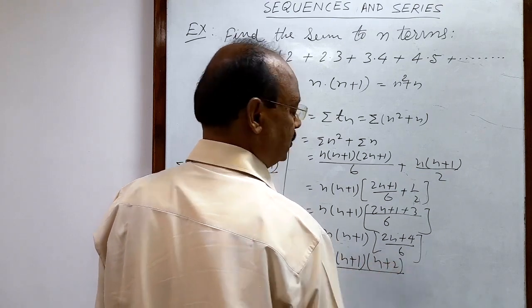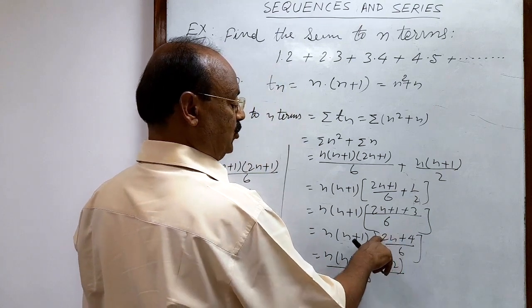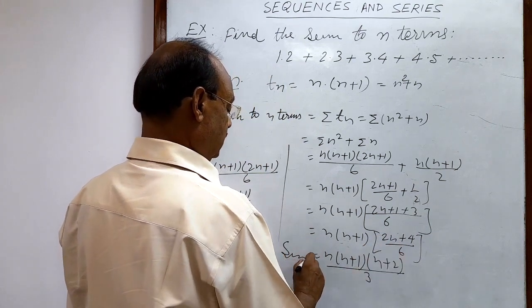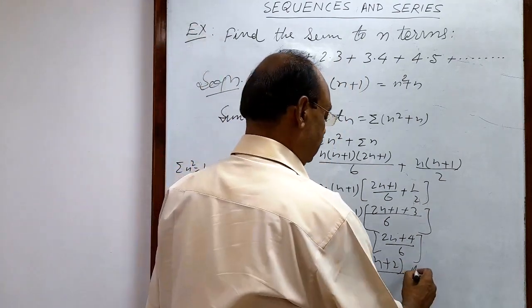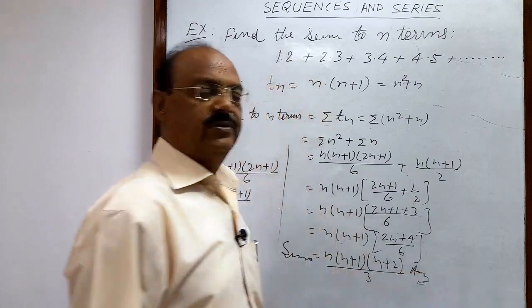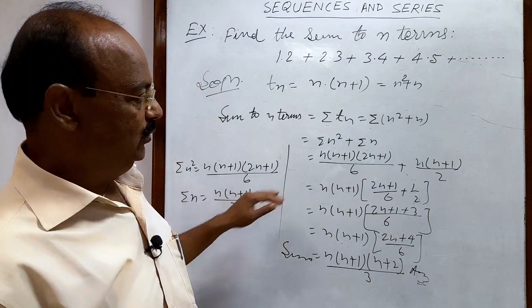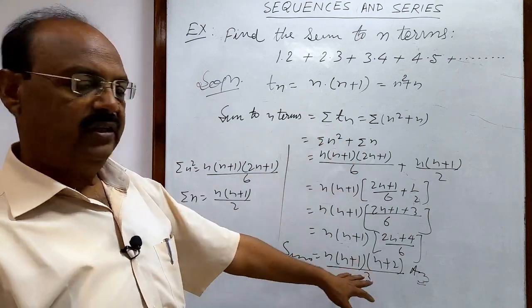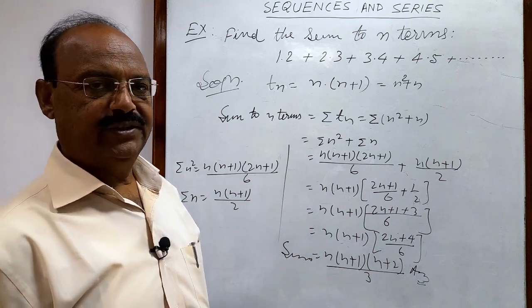Because this common 2 will cancel with the 6, the sum of the series up to n terms is n(n+1)(n+2)/3. This is the answer. The solution is very simple. Just memorize this formula which will be used in different questions. This is the result. Hope you have understood it very well. Thank you very much.